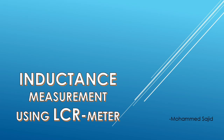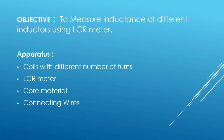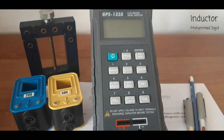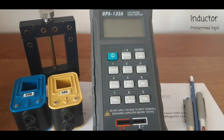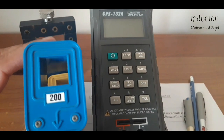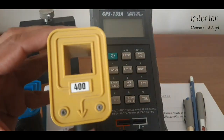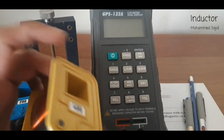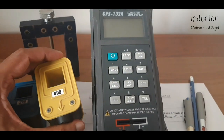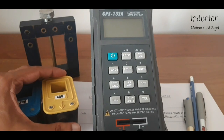The objective of today's experiment is to measure inductance of different inductors, meaning coils with different number of turns, using an LCR meter. We are going to use different coils, an LCR meter, core magnetic material, and connecting wires. We will check the effect of number of turns on the inductance of the coil.